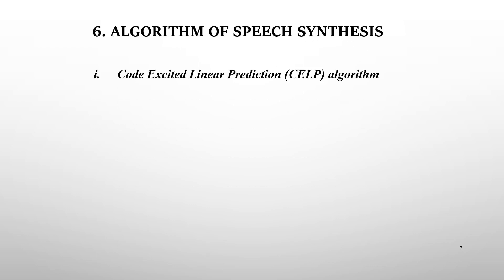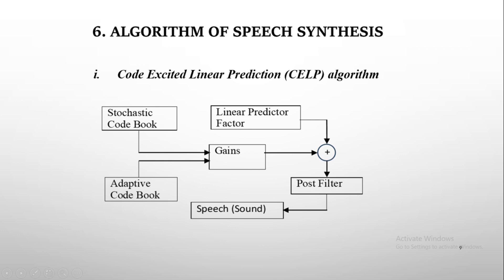Algorithm of speech synthesis. Firstly, we have code-excited linear prediction, the CELP algorithm. Schroeder and Atal describe CELP as the most popular speech synthesis method for data rates ranging from 4 kb/s to 16 kb/s. The adaptive codebook contains the history of previous excitation, while the stochastic codebook comprises independently produced Gaussian random numbers to simplify searches. Gains and a linear predictor factor are added to the outcome of these searches to create speech, and a post filter is used to improve perceptual quality.